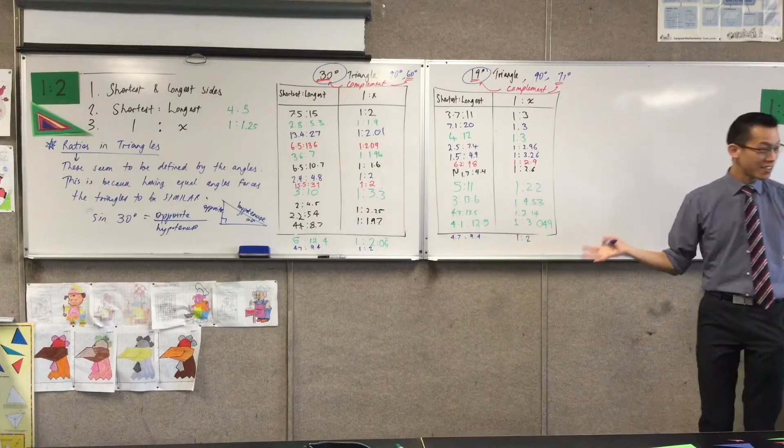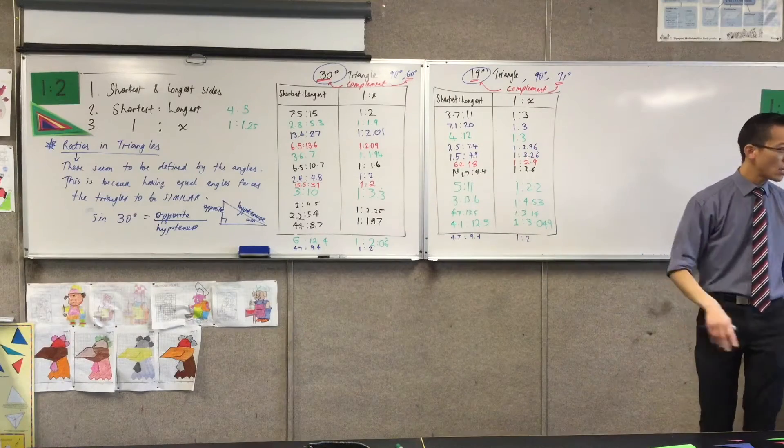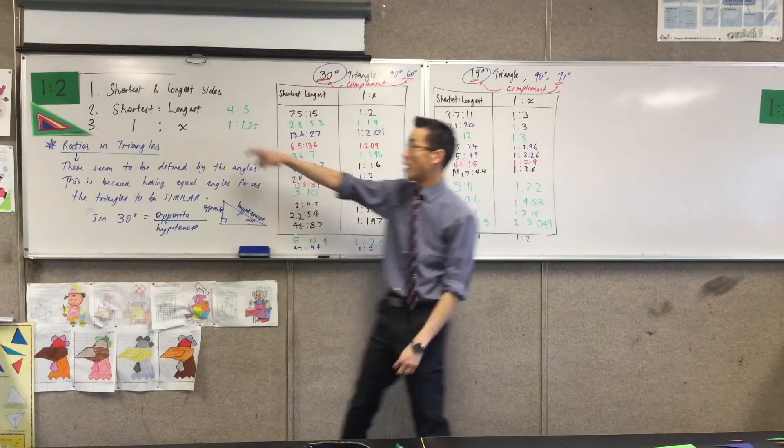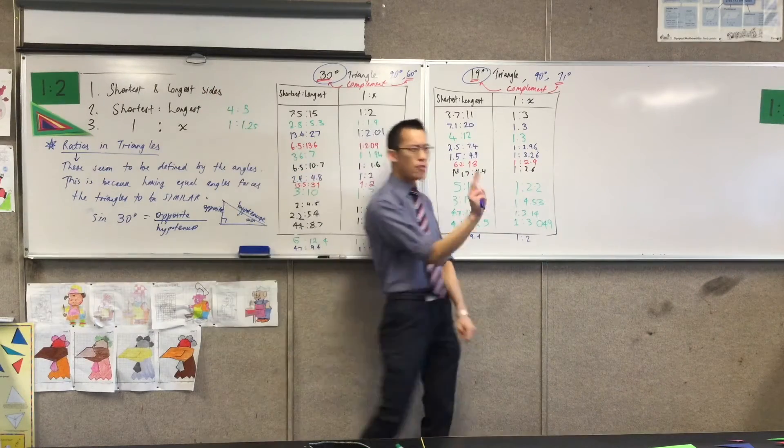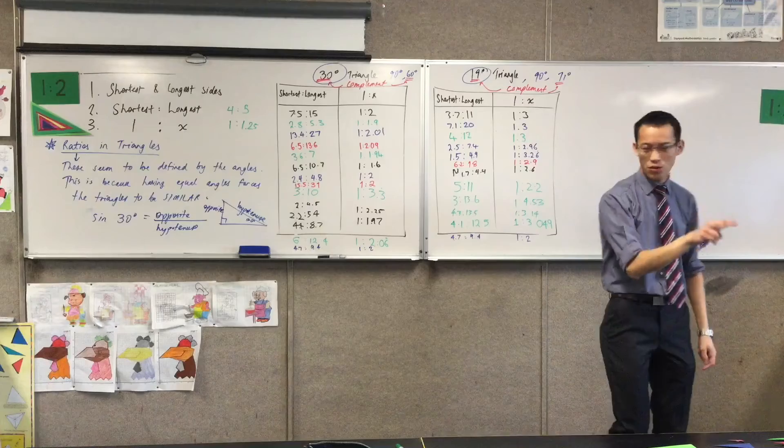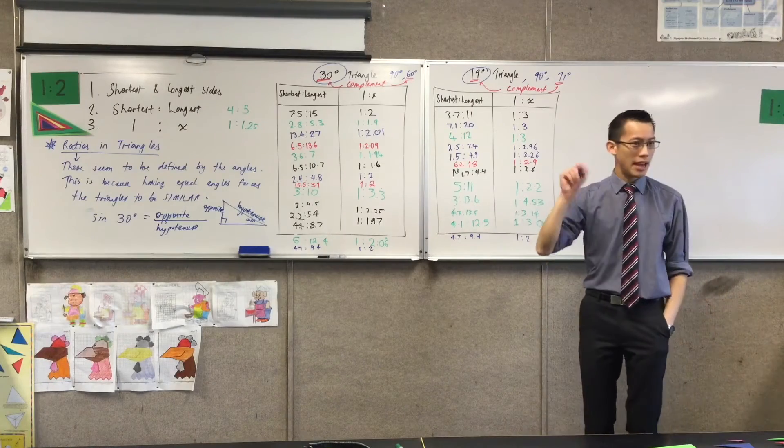This ratio, sine, is opposite on hypotenuse, but there are other ratios too. You didn't have to compare this pair of sides, there's two other pairs you can have in your triangle.